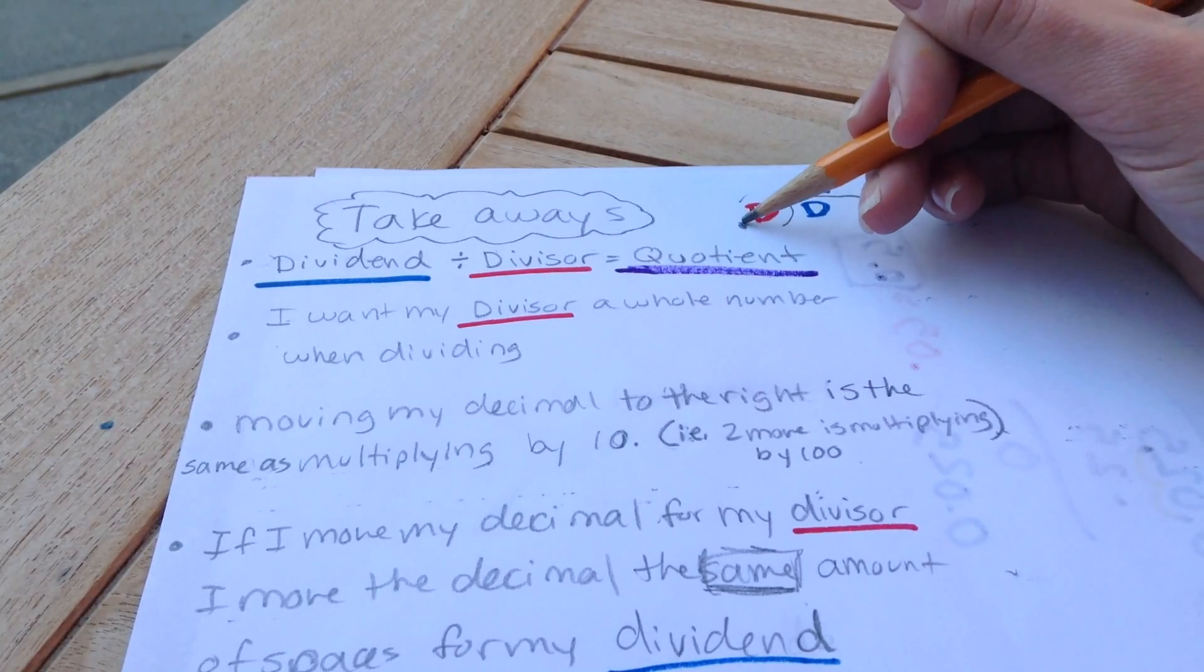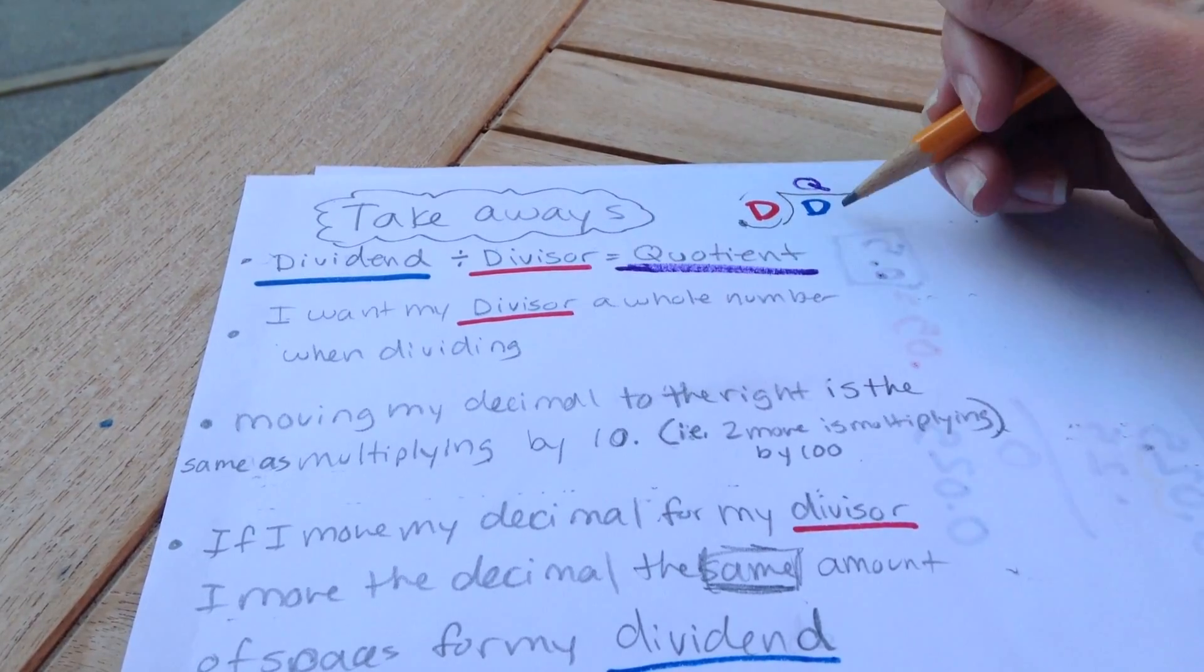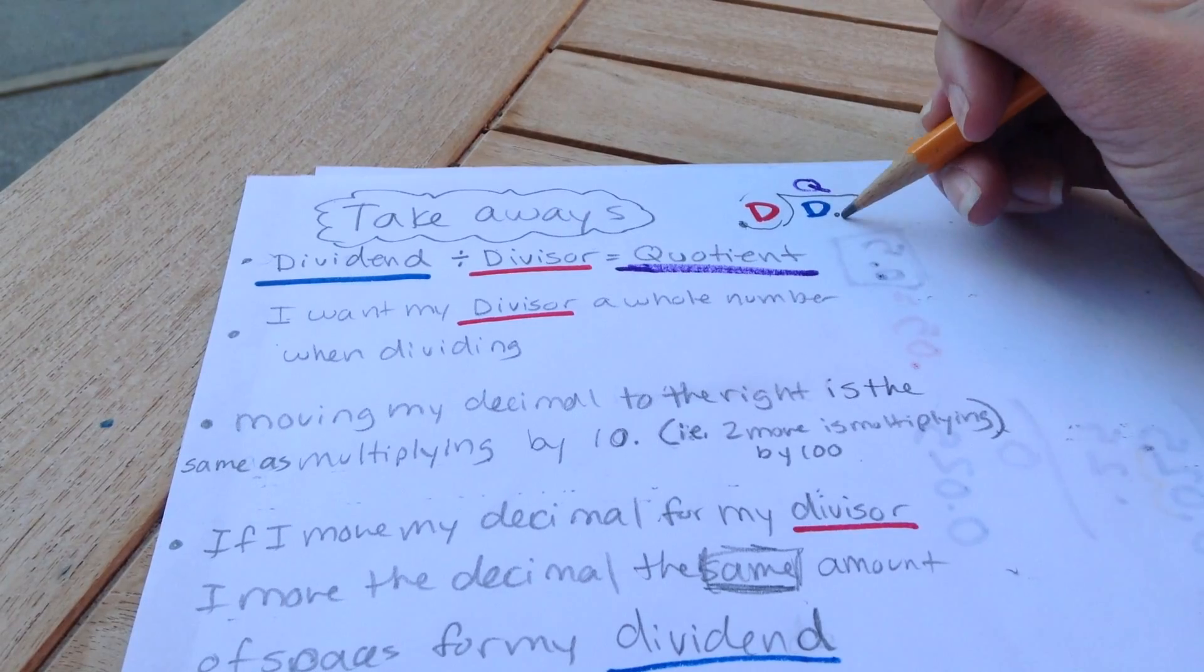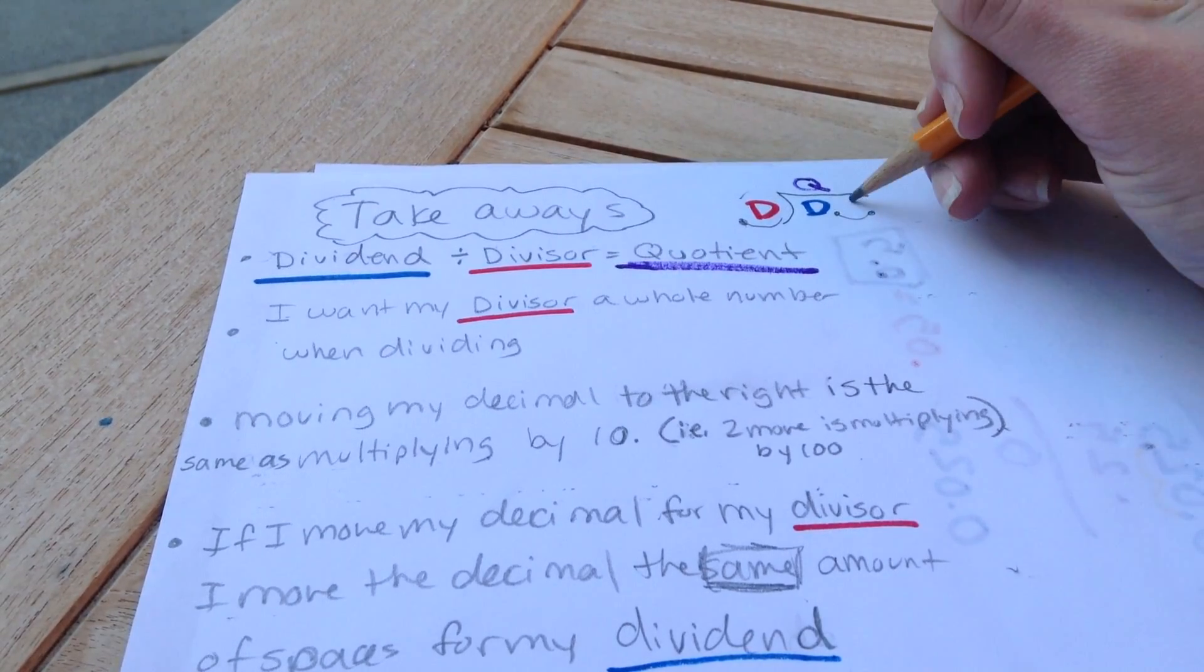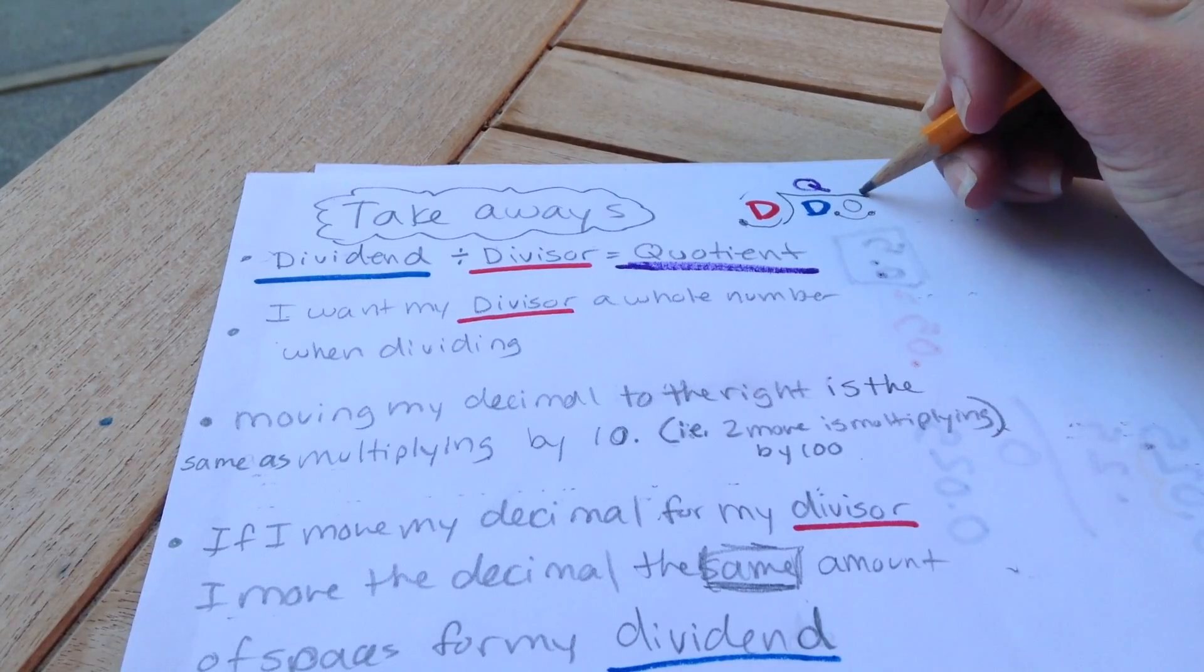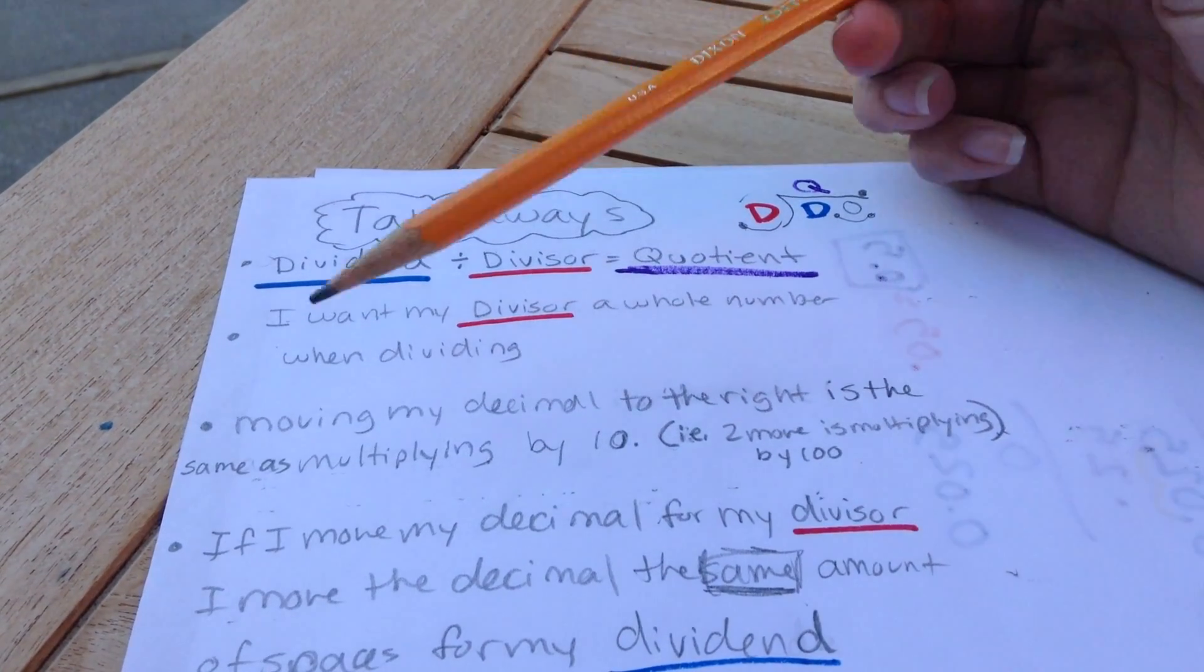So right here, if I have my divisor, and if I move it once to the right, I also need to be able to move my dividend once to the right as well. If there is nothing there, I add a zero, and I bring my decimal up to the top.